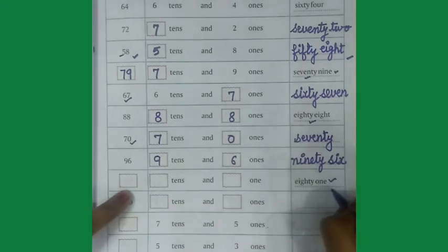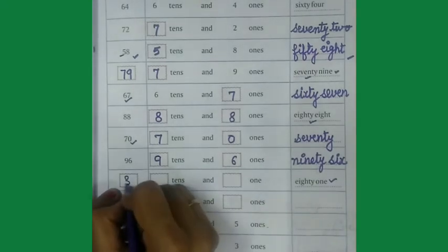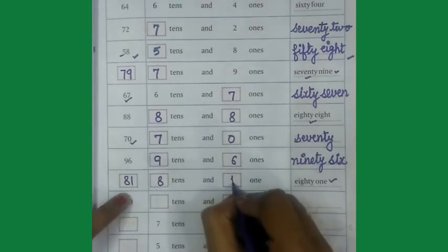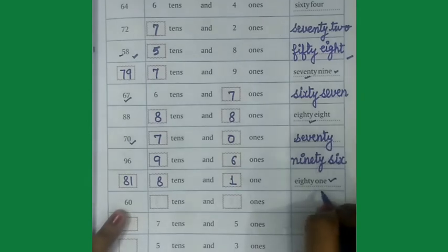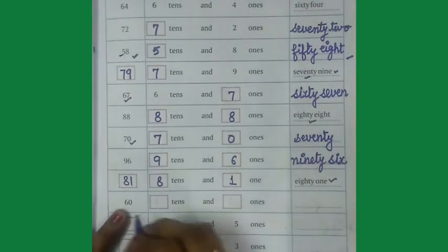Come on next one, 81 is written, so I will write here 81, 8 tens, 1-1. E-I-G-H-T-Y-80-O-N-E-1.